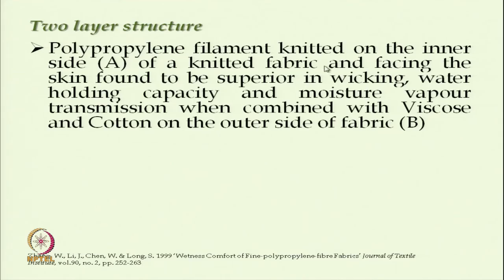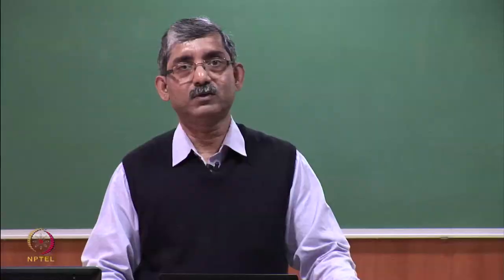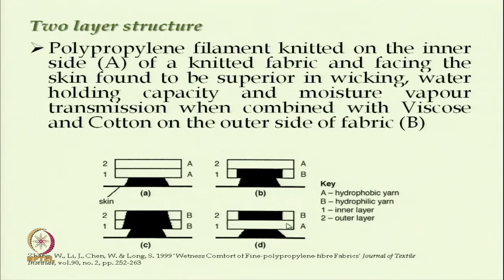Polypropylene filament knitted fabrics on the inner side (layer A) facing the skin have been found superior in wicking, water holding capacity, and moisture vapour transmission when combined with viscose or cotton in the outer layer. So polypropylene along with viscose or cotton can be used — A is polypropylene and B is either cotton or viscose.